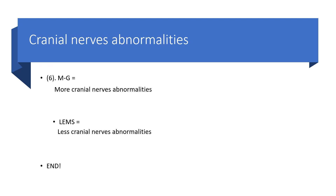How about cranial nerve abnormalities? In myasthenia gravis, there are more cranial nerve abnormalities, while Lambert-Eaton myasthenic syndrome will present with less cranial nerve abnormalities. With that, I've come to the end of this short presentation. If you rewind and play from the first slide, you will be able to pick up all the differences between myasthenia gravis and Lambert-Eaton myasthenic syndrome.